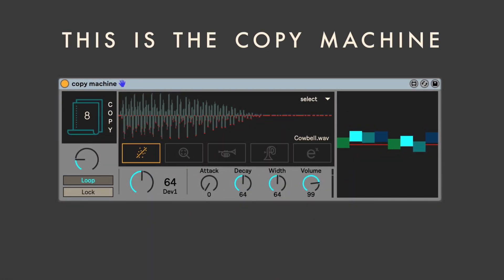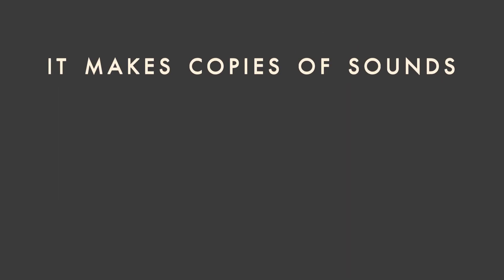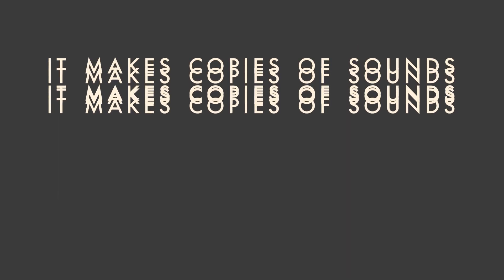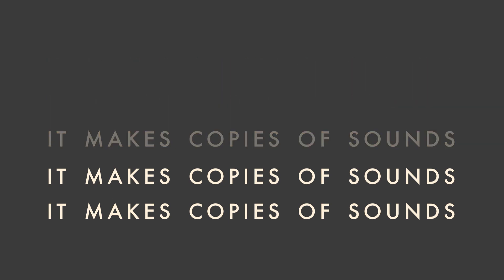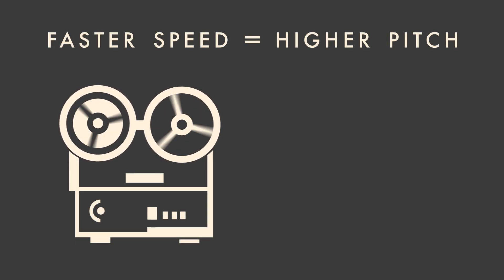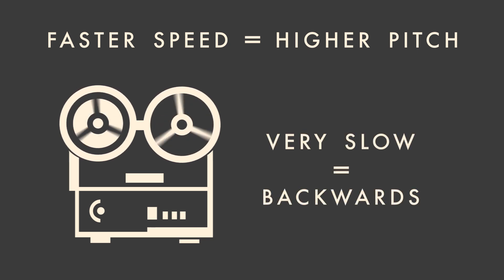This is the Copy Machine. It's a sampler that makes copies of sounds. Each copy that it makes will play back at a different speed. Just like on a tape recording, a different speed means a different pitch. And if you slow it down enough, you will hear the copy play in reverse.